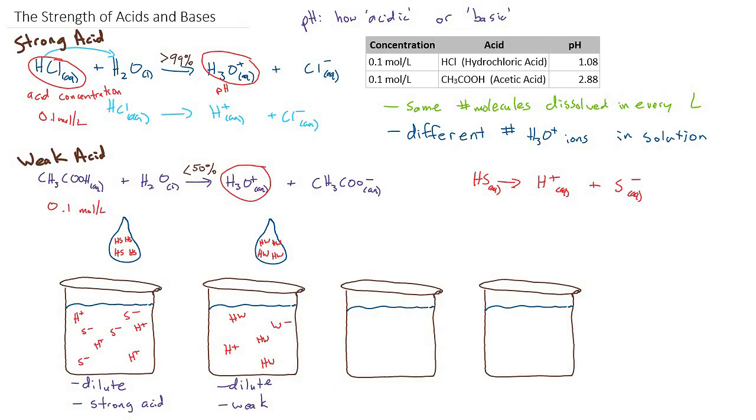And so our next step in our thought experiment is to now consider concentrated solutions. And one of them will be a strong acid, and the other one will be a weak acid. And so the way I'm going to show concentrated and dilute is to show that now I'm going to put two drops in. So it's going to be more concentrated because I'm putting twice as many molecules in.